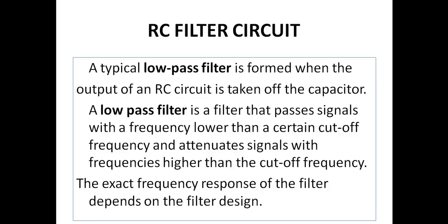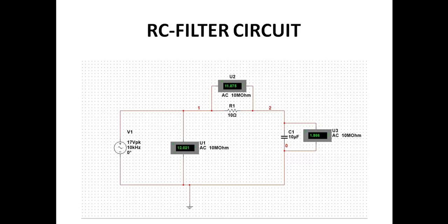Now these are RC filter circuits. A typical low pass filter is formed when the output of an RC circuit is taken off. Low pass filter passes low frequencies and stops high frequencies. The high pass filter basically passes high frequencies and rejects low frequencies.